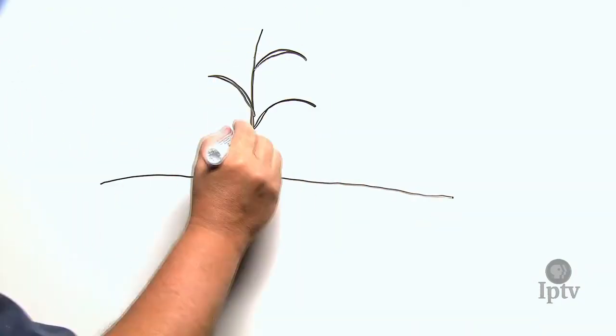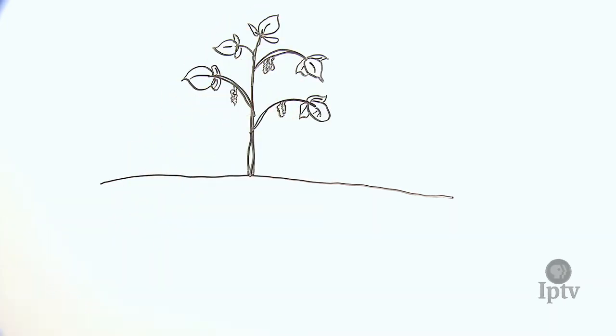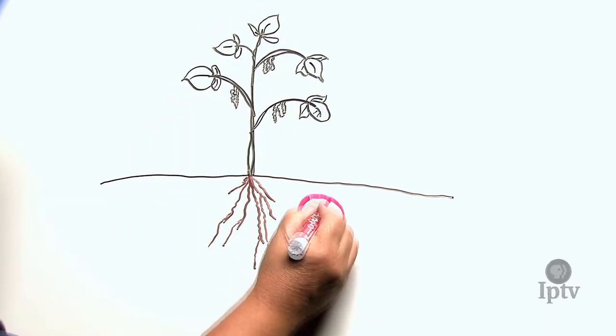Now consider what might happen if a farmer chooses to plant a strain of soybeans that are resistant to the SCN parasites. What might happen to the parasite population?